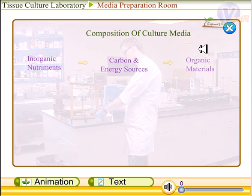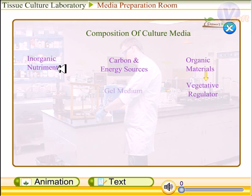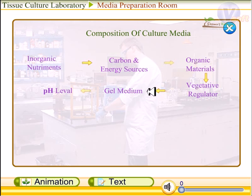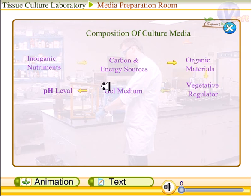Now we will look at the composition of the culture media. They are made up of inorganic nutrients, a carbon and energy source, organic materials, a vegetative regulator, and a gel medium to solidify the liquid medium. The pH must also be adjusted to the desired level.